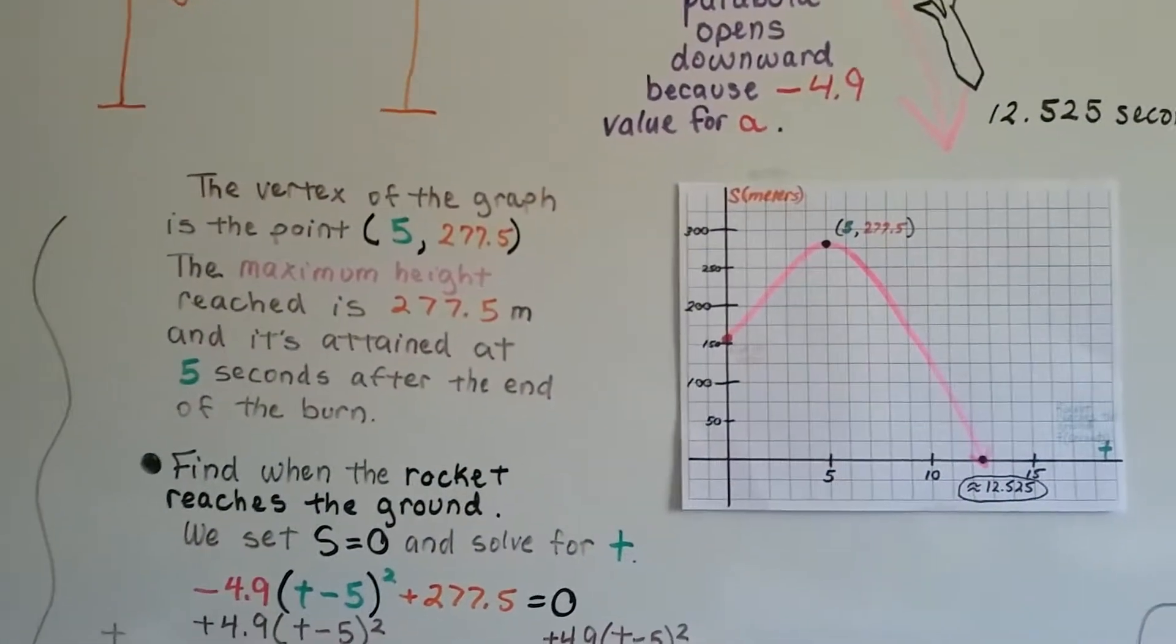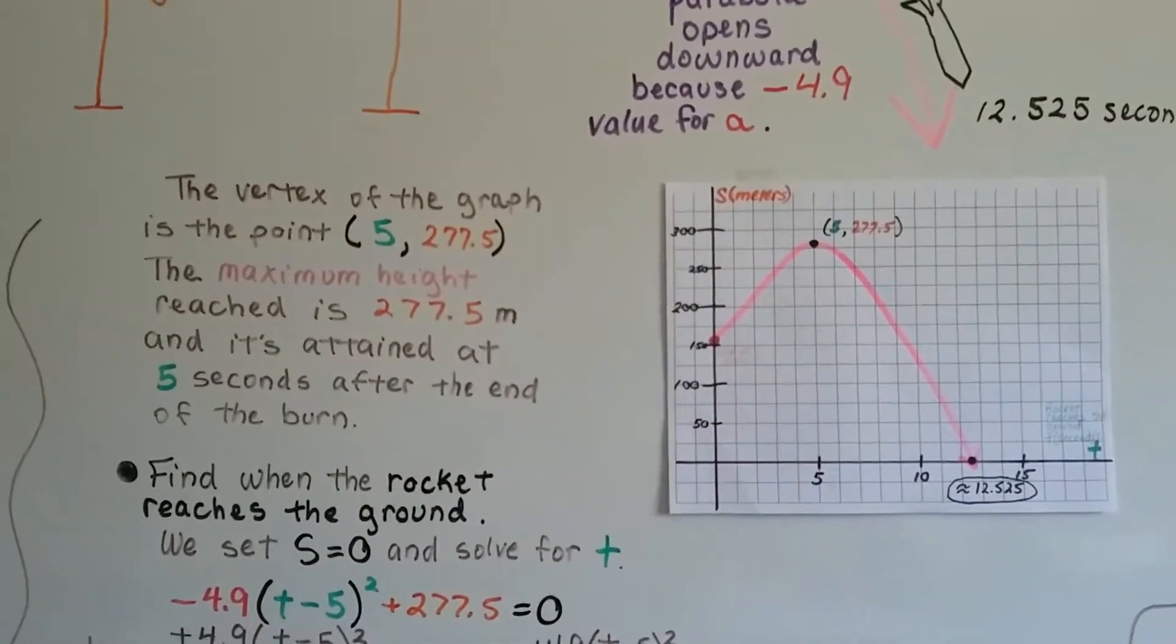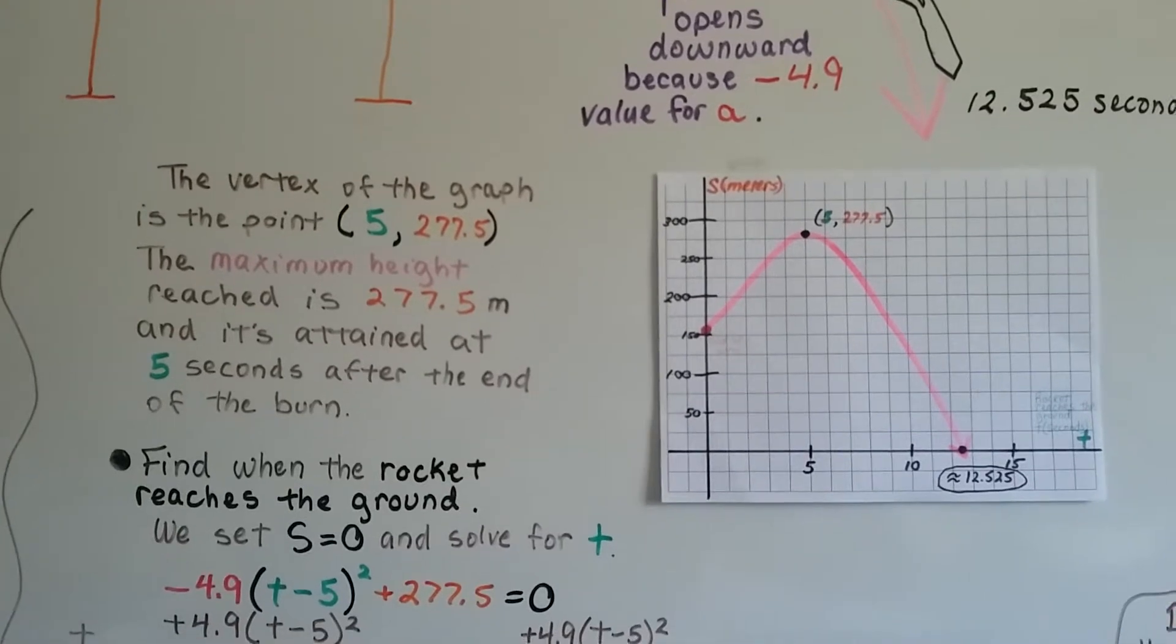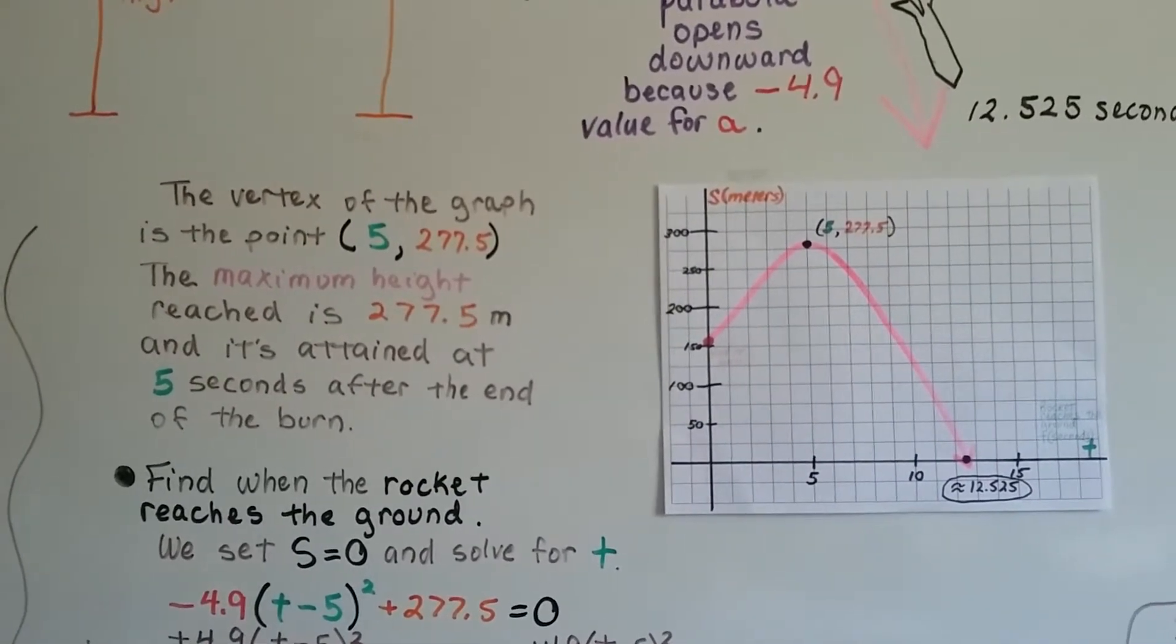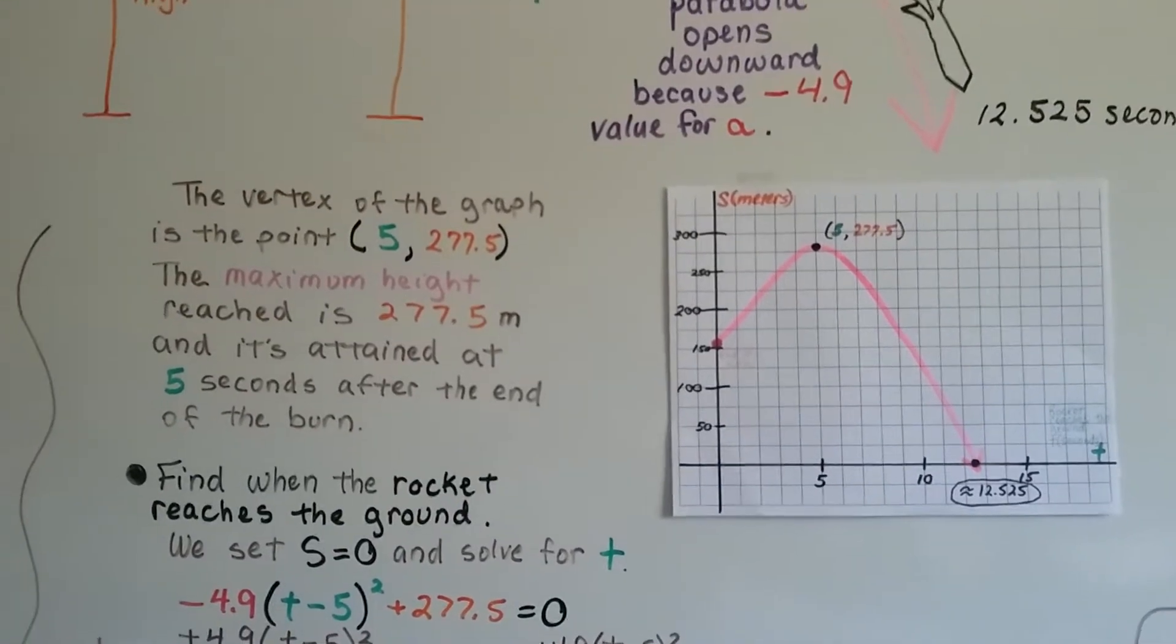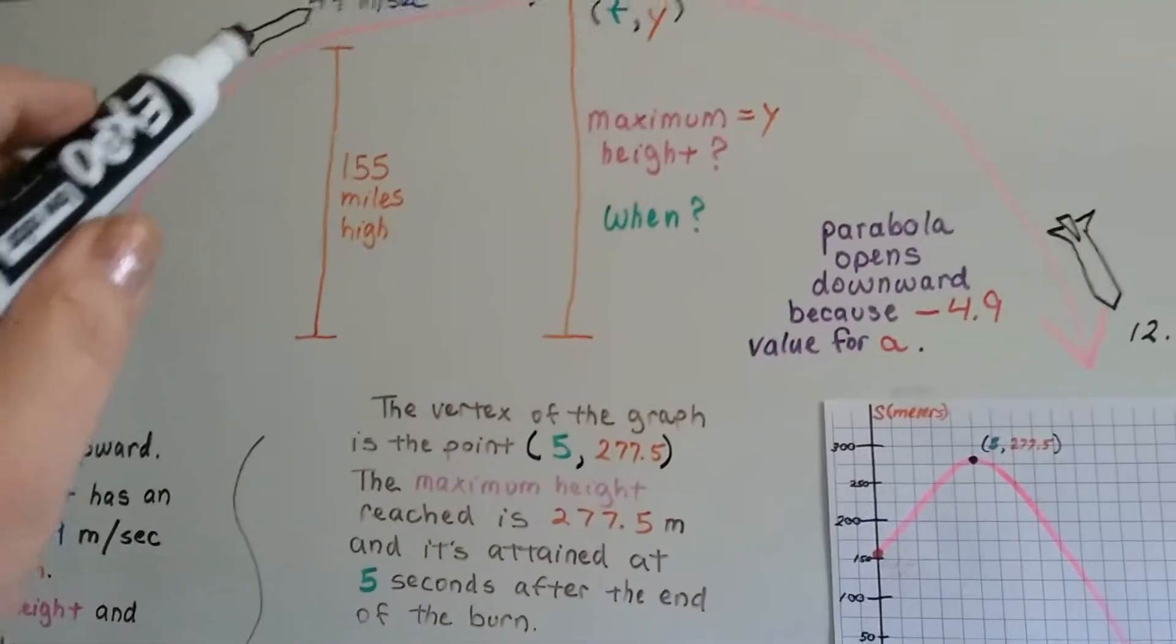The vertex of the graph is the .5 for x and 277.5 for y. The maximum height reached is 277.5 meters, and it's attained at 5 seconds after the end of the burn. That's when it stopped burning.